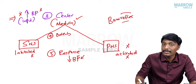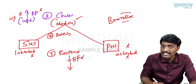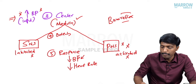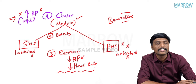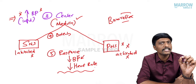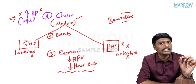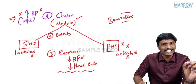Not only that — there is parasympathetic activation. Heart rate will also decrease. Because there is parasympathetic activation, BP will fall and heart rate will fall. This is the response of this reflex. In baroreflex, in response to increase in blood pressure, there will be decrease in blood pressure and decrease in heart rate.